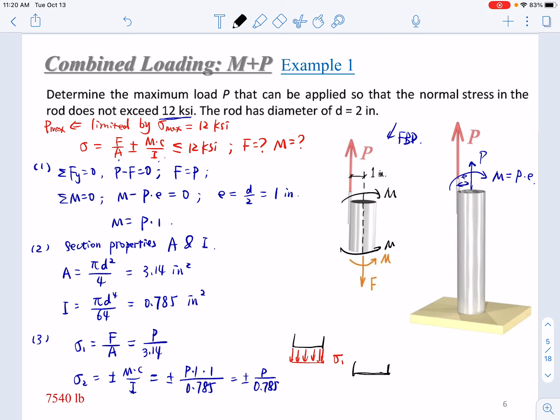On the right end, it will be in compression. So the distribution, the neutral axis will be in the middle. So on the left end, it will be in tension. And on the right end, it will be in compression. So this is the distribution of sigma 2.